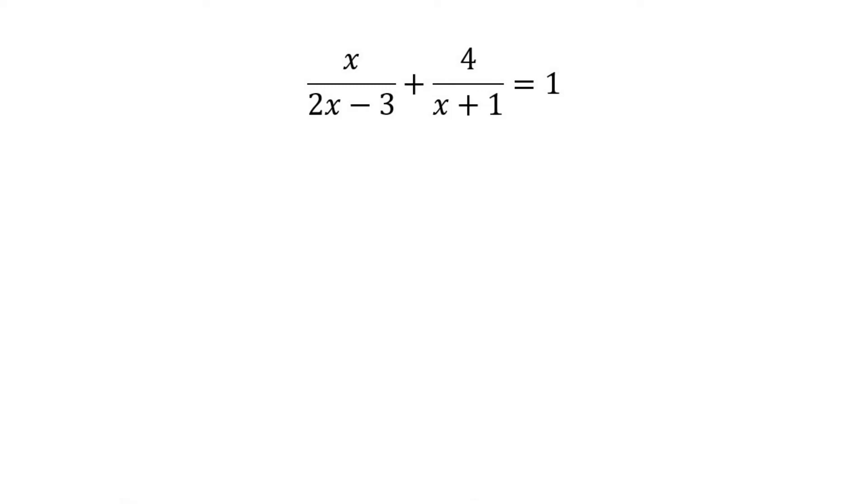We can instantly see that the denominators are factorized, and so we can get our lowest common denominator as 2x minus 3 and x plus 1.